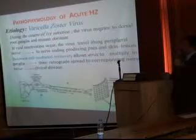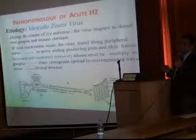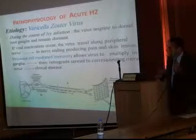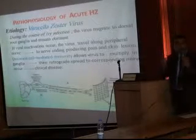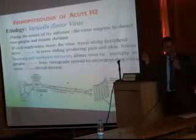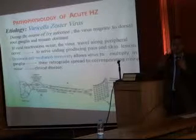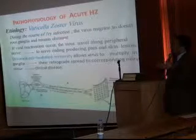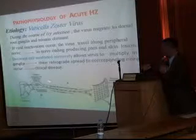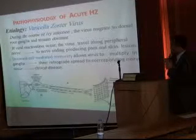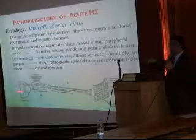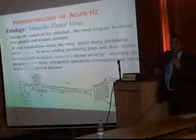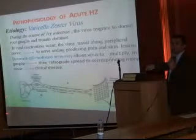The causative organism for herpes zoster is the varicella zoster virus, which causes chickenpox in children. During childhood, if there is infection by varicella zoster, the virus remains dormant in the dorsal root ganglia — this is the only place. This is how the chickenpox virus is harbored.